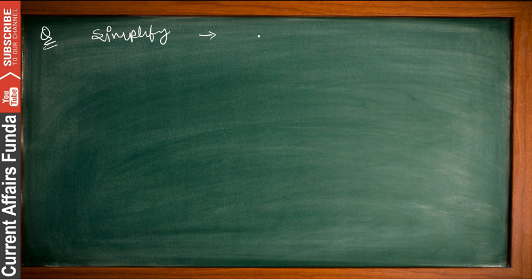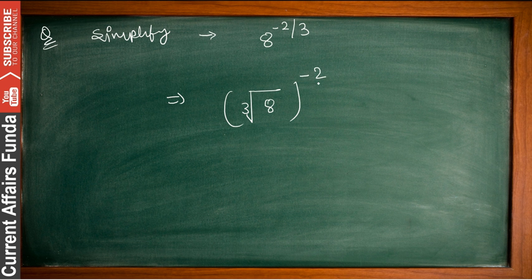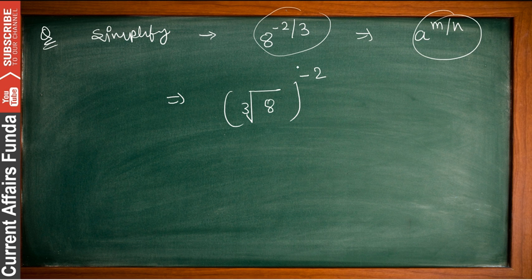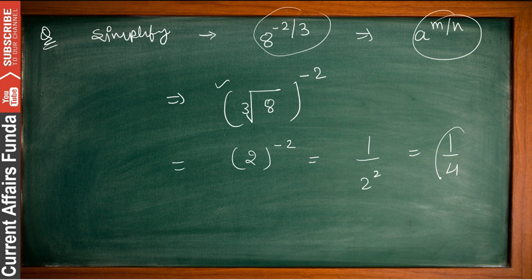For 8 to the power minus 2 by 3, the denominator 3 denotes a cube root, so 8 goes inside the cube root and minus 2 is the power. Comparing with the general form a to the power m divided by n, the cube root of 8 is 2. So we get 2 to the power minus 2, which equals 1 divided by 2 squared, giving 1 by 4 as your answer.